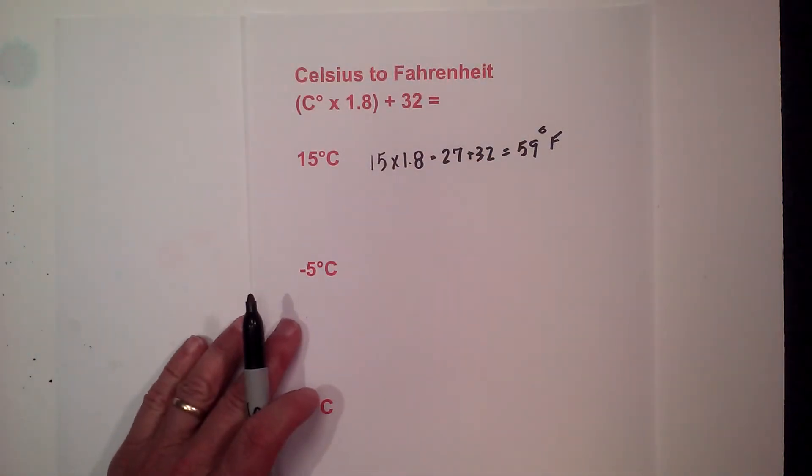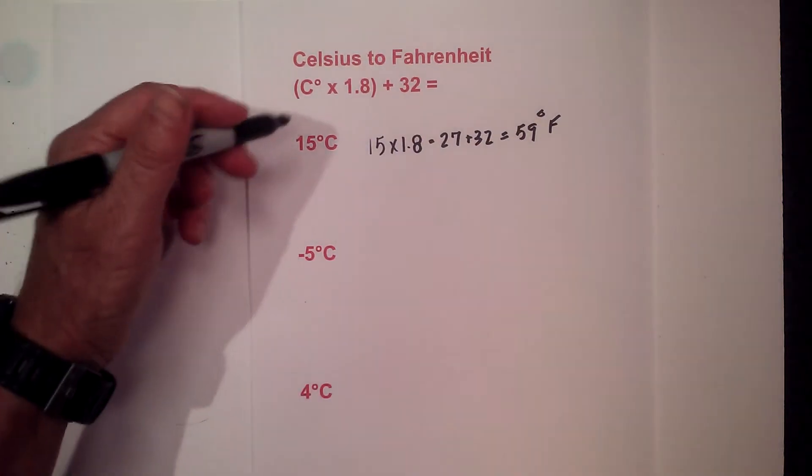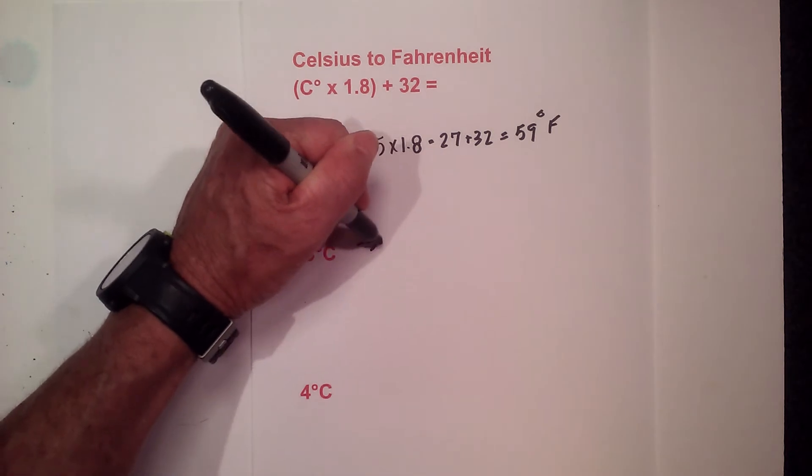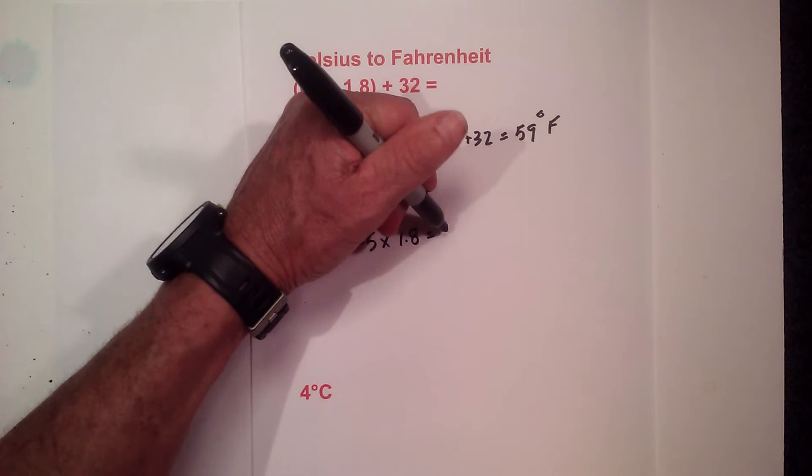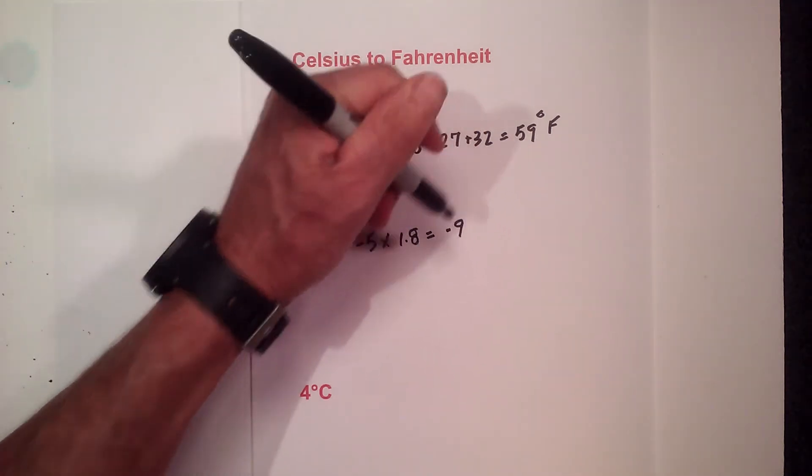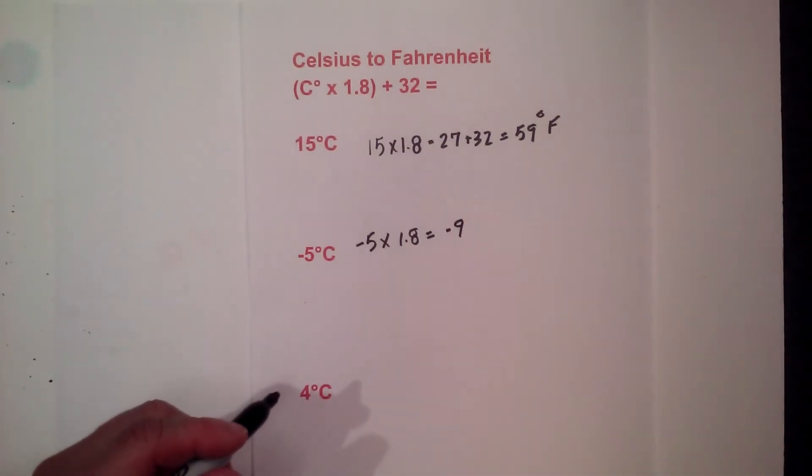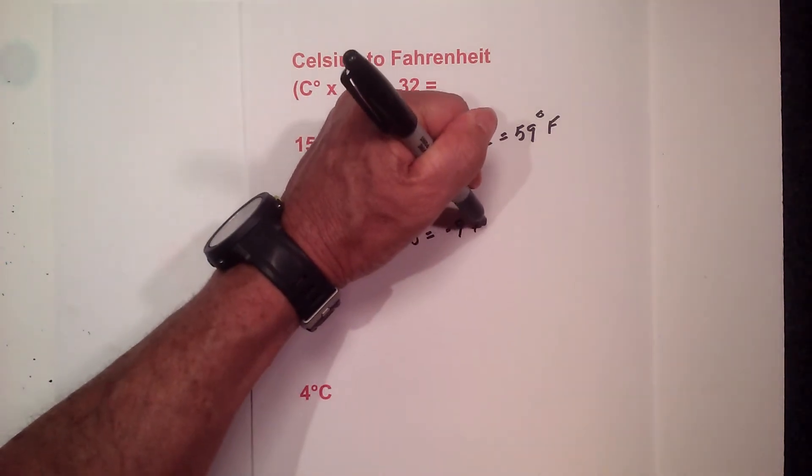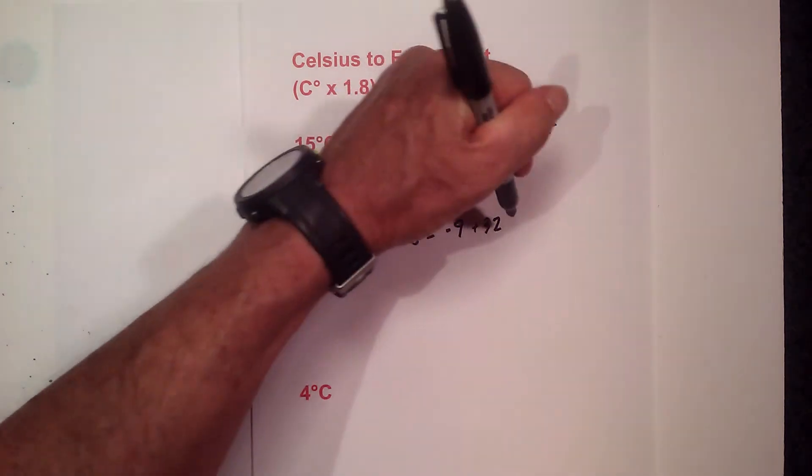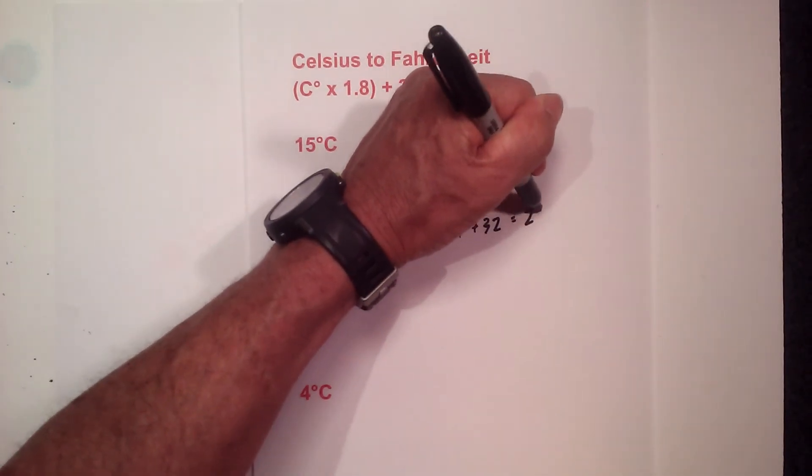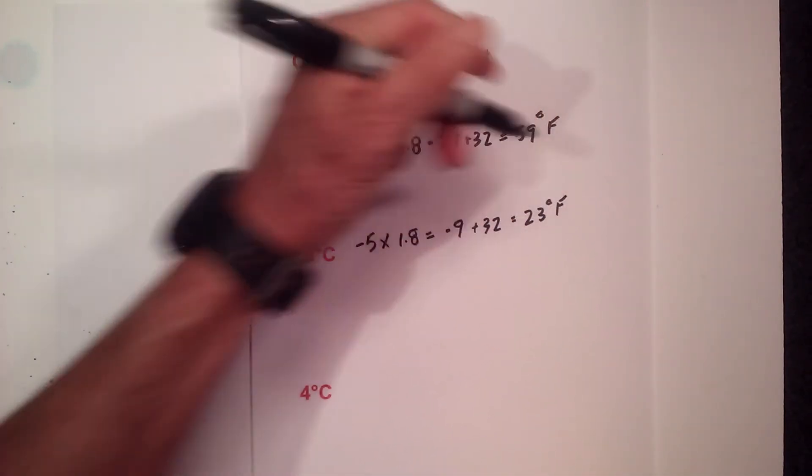How about a negative number? Well let's go negative 5 times 1.8 and that is going to equal negative 9, and then add 32 to negative 9. Remember you can look at it like 32 minus 9 and that equals 23 degrees Fahrenheit.